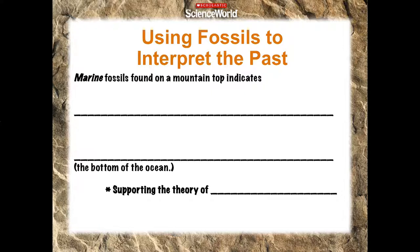Marine fossils found on a mountaintop indicates that mountain was once underwater — maybe that was an ocean area that formed in a different environment, like the bottom of the ocean. What theory does this support? Pangea — and if you don't remember, Pangea was a large single mass of continents that then broke apart through continental drift. Isn't it true the Earth could possibly come back together?